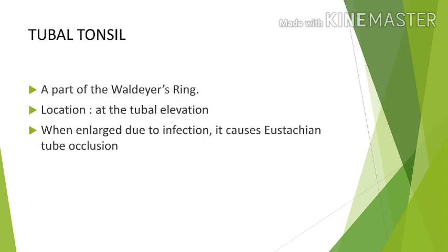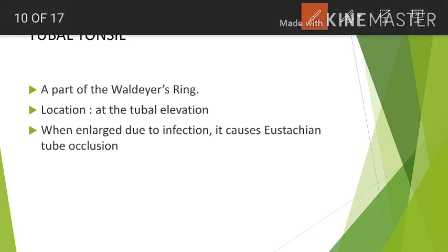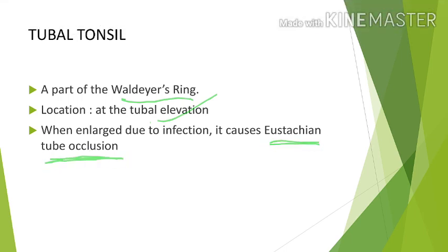The tubal tonsil is a sub-epithelial lymphoid tissue collection and a part of Waldeyer's ring. Its location is at the tubal elevation. Importantly, when enlarged due to infection, it can cause eustachian tube occlusion — hence the name tubal tonsil, given its close association with the eustachian tube.